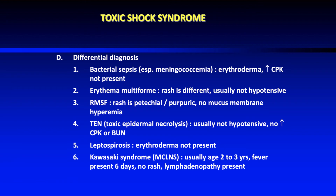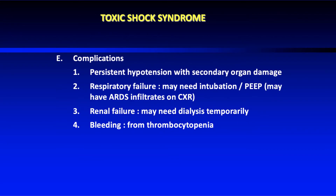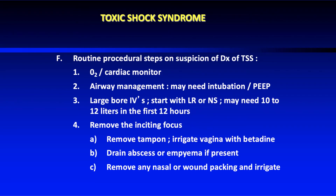Sepsis is the most important diagnosis to rule out. Additional differentials include scarlet fever, rheumatic fever, hemolytic uremic syndrome, rubeola, and gastroenteritis. Complications of toxic shock syndrome include persistent hypotension with organ damage, respiratory failure, renal failure, and bleeding from thrombocytopenia.